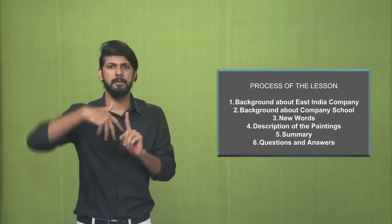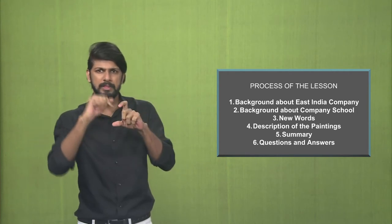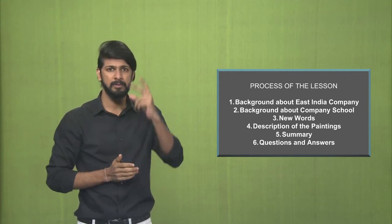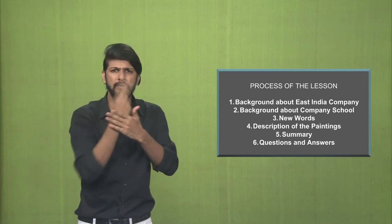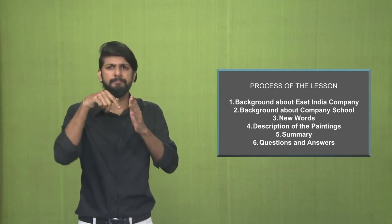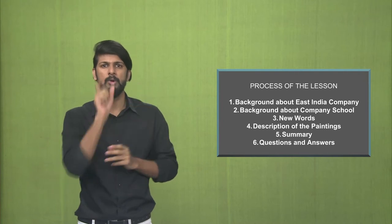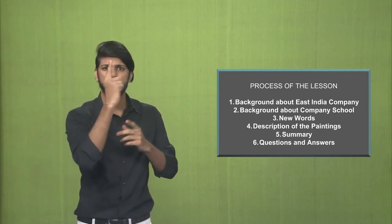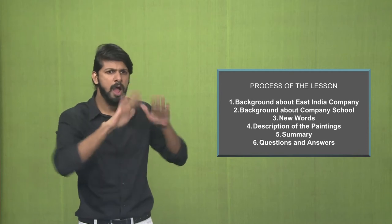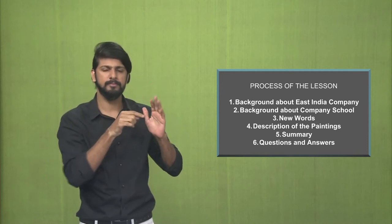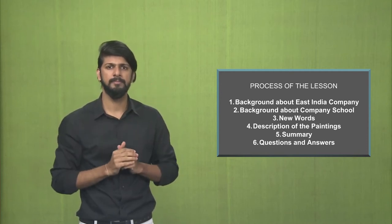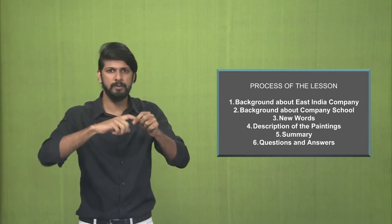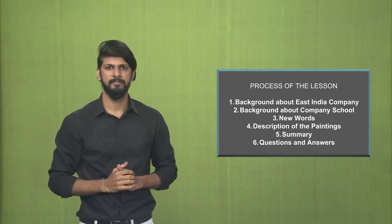We will discuss the process of the lesson. First, we will understand the background about the East India Company. Then, we will understand the background about the company school. Third, we will have new words from the lesson. Fourth, is the description of the paintings mentioned in this chapter. Fifth, is the summary and then, finally, we will have the questions and answers.